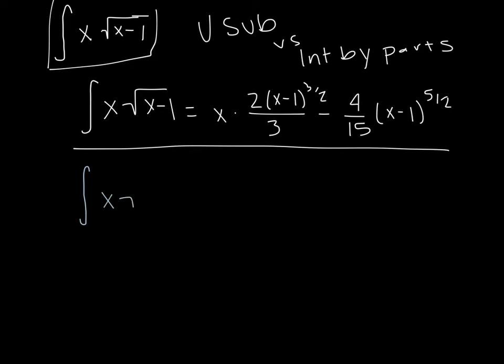We're going to do x radical x minus 1, u substitution. So we're going to set our u equal to x minus 1. And because we have an x out front, we have to also solve for what x would equal. And x in this case is going to equal u plus 1.